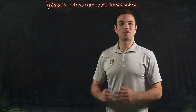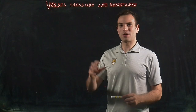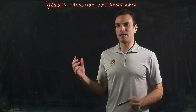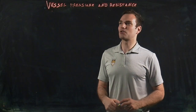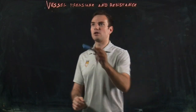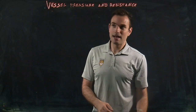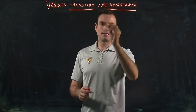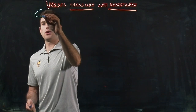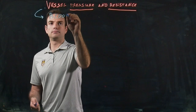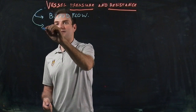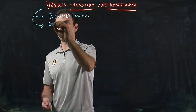Hi everyone again. After this first part of the lecture, we are going to jump into the second part. So after seeing all the different blood vessels — the arteries, the veins, and the arterioles — we are going to look at very important concepts that determine blood flow: vessel pressure and vessel resistance. These two concepts are really important because they determine the blood flow and also the exchange rate at the capillary.